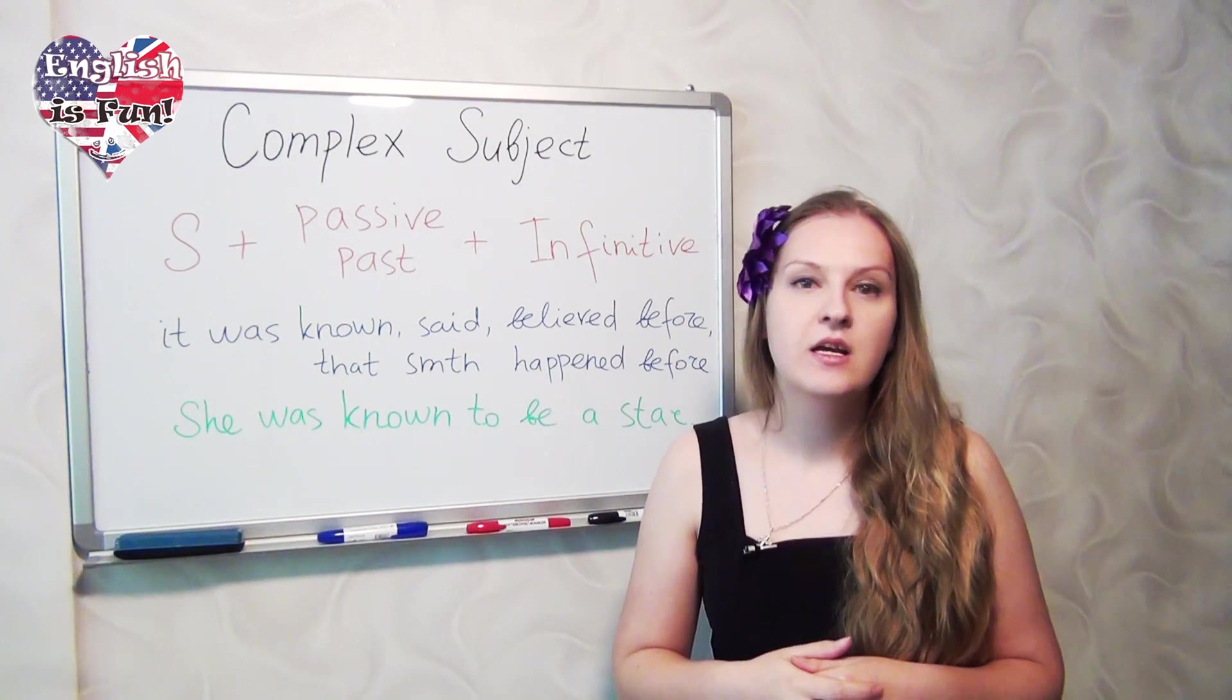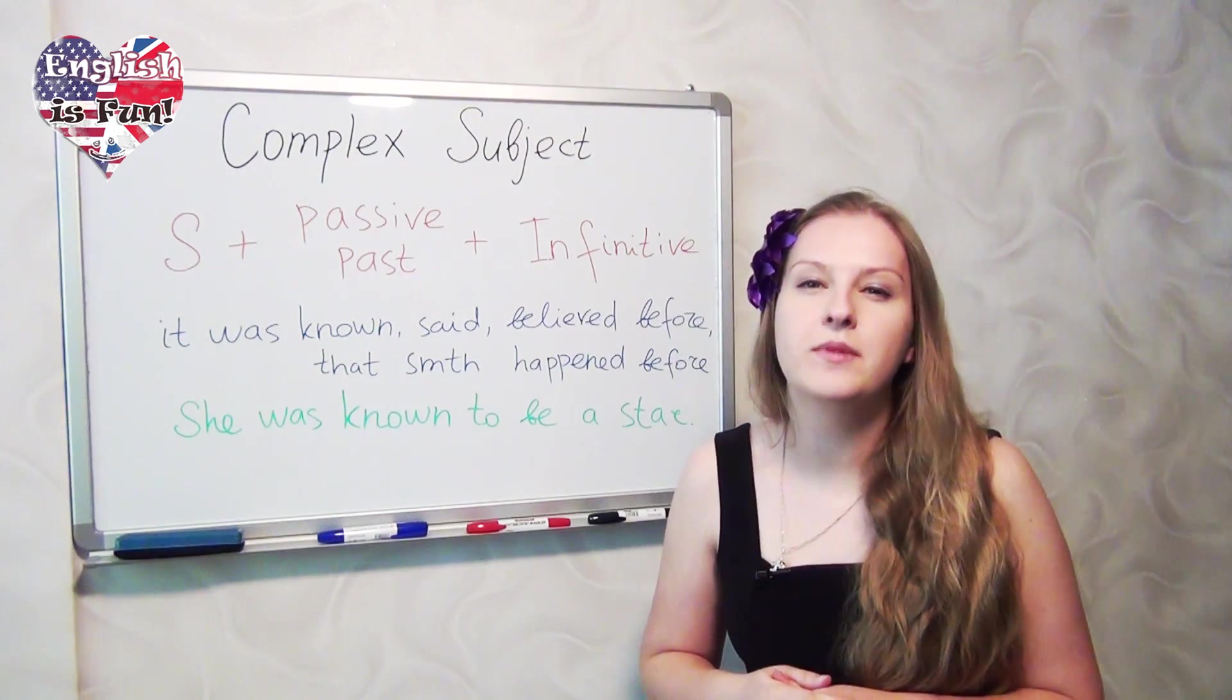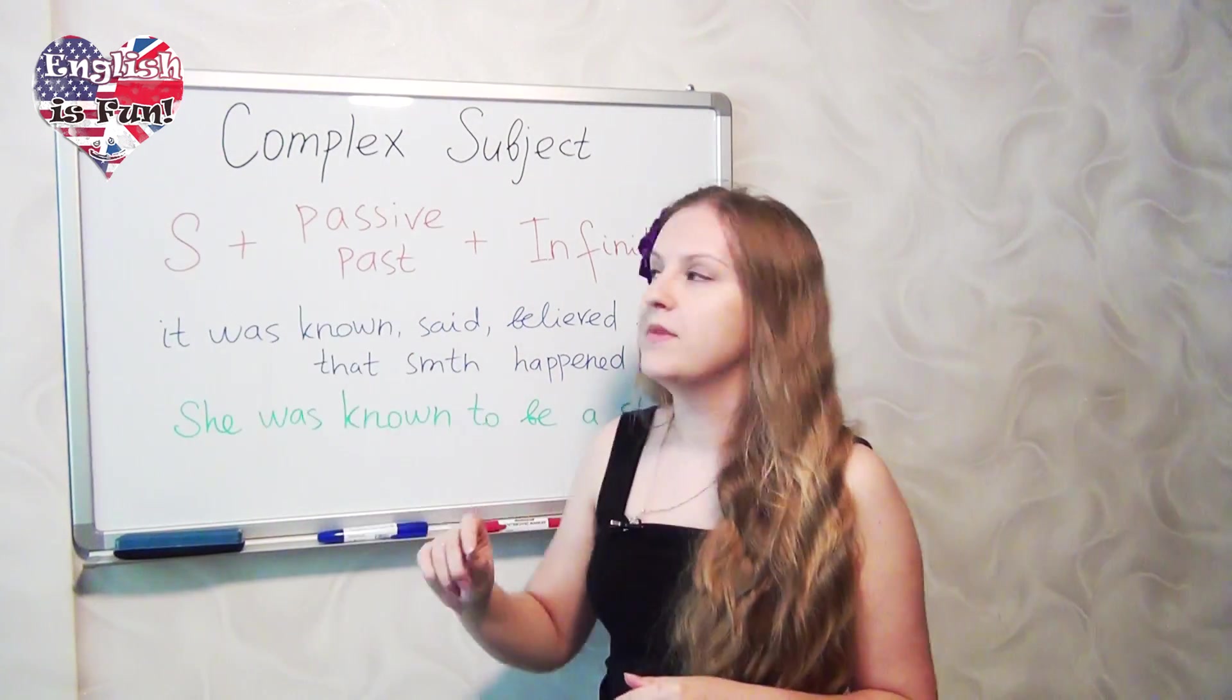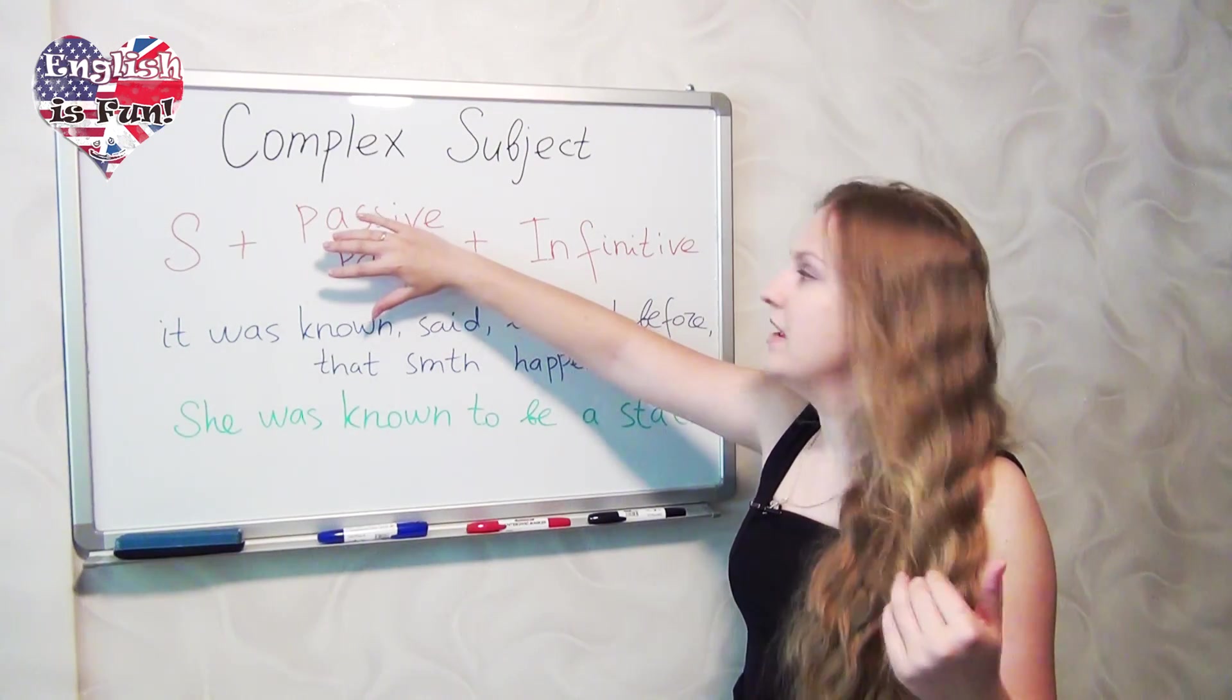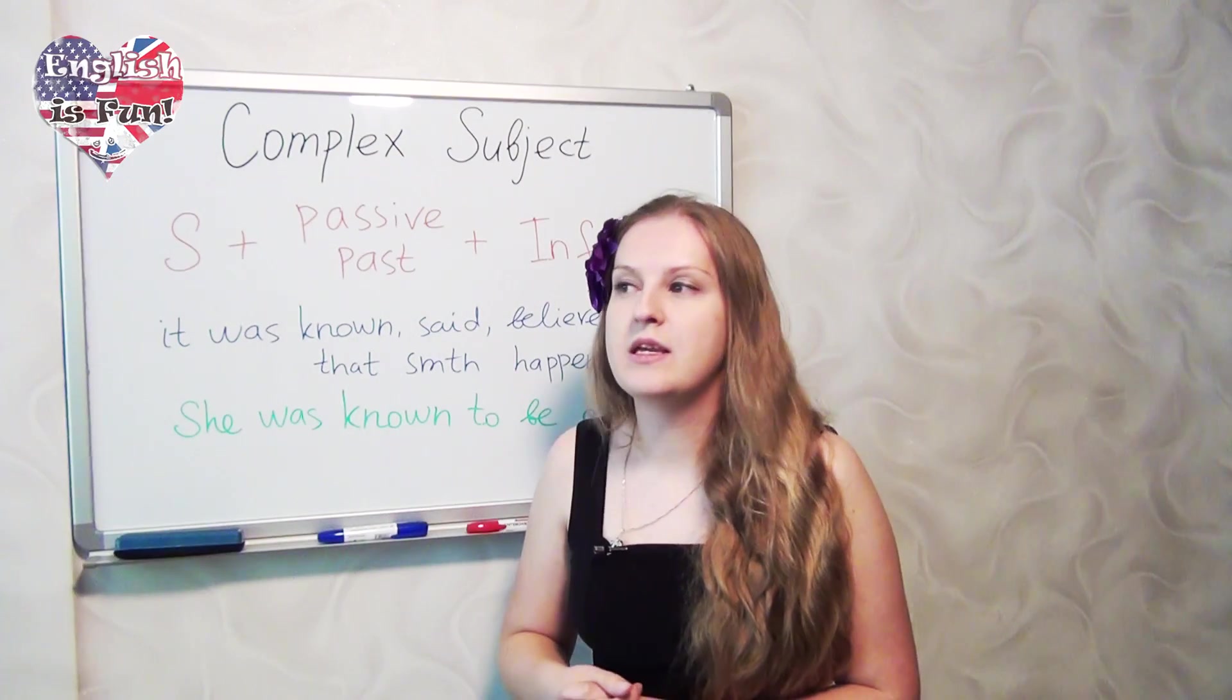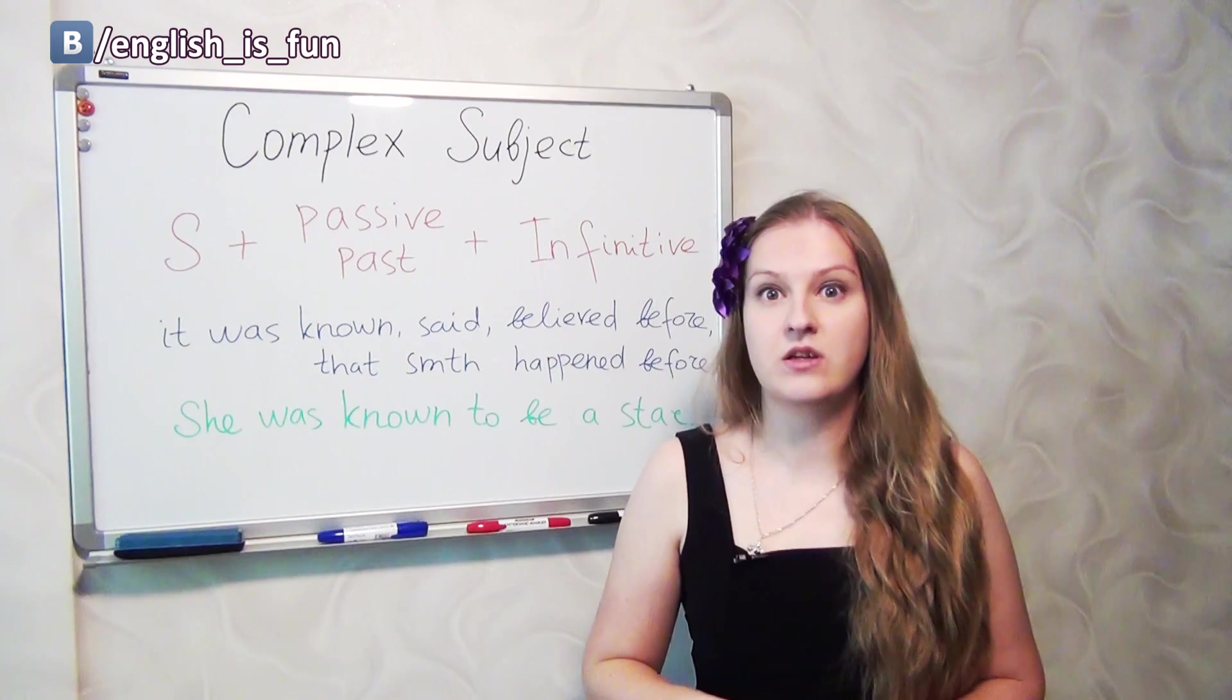So in the previous class I taught you some basics. The basic structure of a complex subject sentence is you use the subject, after that you use passive voice, any tense actually, and then you use infinitive. For example, she is known to be a star. So it means that everybody knows that she's a star.